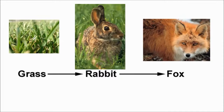Now when you're drawing food chains it's really important you draw the arrows pointing in the direction that the energy flows. So the energy from the grass goes into the rabbit, so the arrow points in that direction.